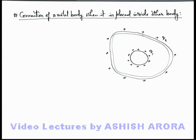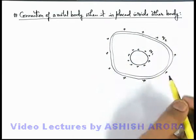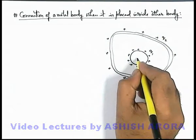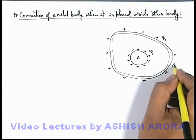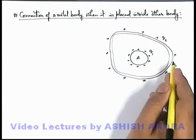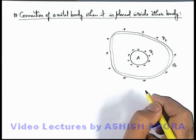Let's discuss the connection of a metal body when it is placed inside another body. Here you can see metal sphere A, which is charged with charge q1, is placed inside another metal body, hollow metal body B which is charged with charge q2.